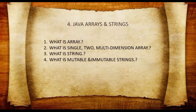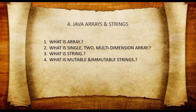Next comes Java arrays and strings. You may have come across arrays and strings in C and C++. What makes Java arrays and strings different is that in Java, arrays and strings are treated as objects. You need to know what an array is, what single-dimension, two-dimension, and multi-dimensional arrays are, how they are declared and initialized. For strings: what is a string, mutable vs immutable strings, and where strings are stored.